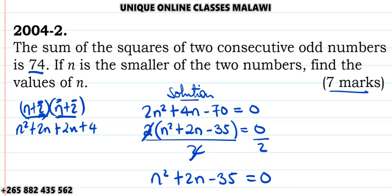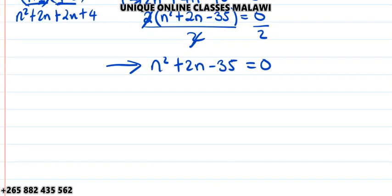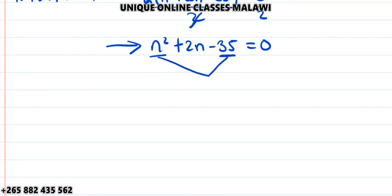This is the simplified version. You can solve by factorization, by quadratic formula, or by completing the square. We're going to use the factorization method. To factorize this, take n² times -35, which is -35n². When I multiply these terms, if it's negative like this, it means one of the two factors is negative and one is positive.